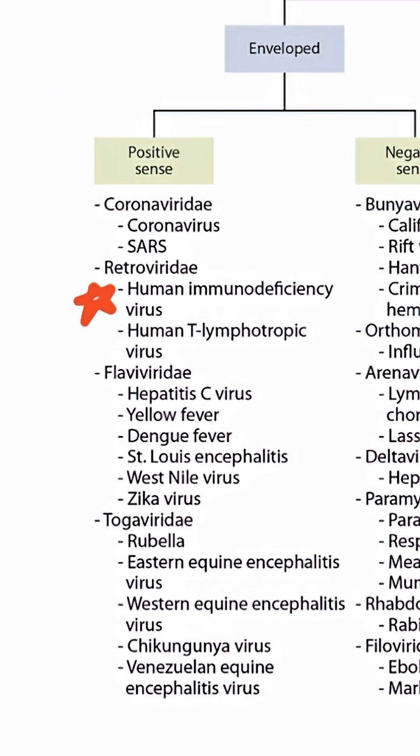There are two forms of HIV: HIV-1 and HIV-2. HIV-2 is much less common and is endemic in West Africa, while HIV-1 is much more common. Most of the time when someone says HIV, they're referring to HIV-1. For the boards, it's much higher yield to be familiar with HIV-1, so in this video, that will be our focus.